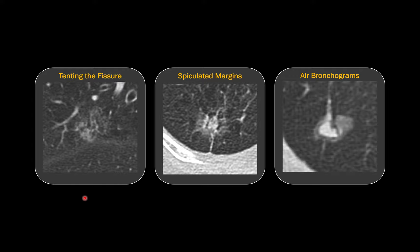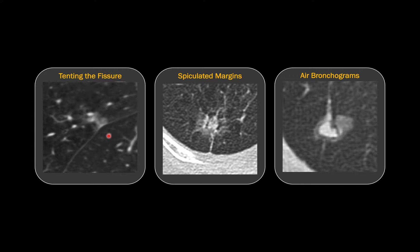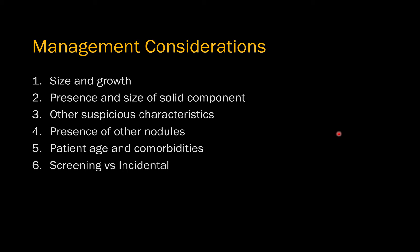A few features increase suspicion for cancer. One is tenting of the fissure — easier to appreciate on sagittal images. Spiculated margins also make a lesion more suspicious for cancer, as does the presence of air bronchograms. These features, along with size and the solid component, factor into the overall assessment.